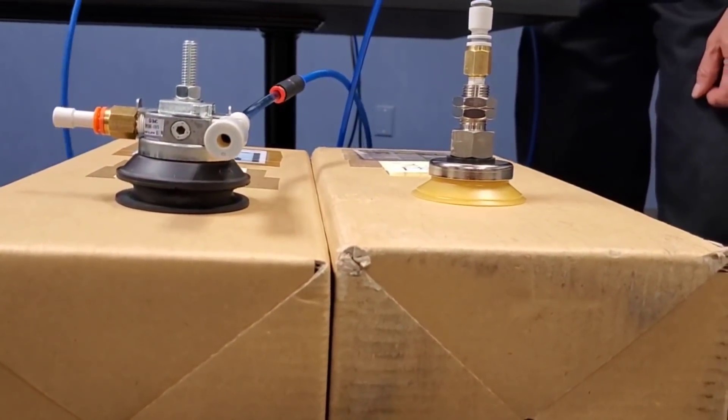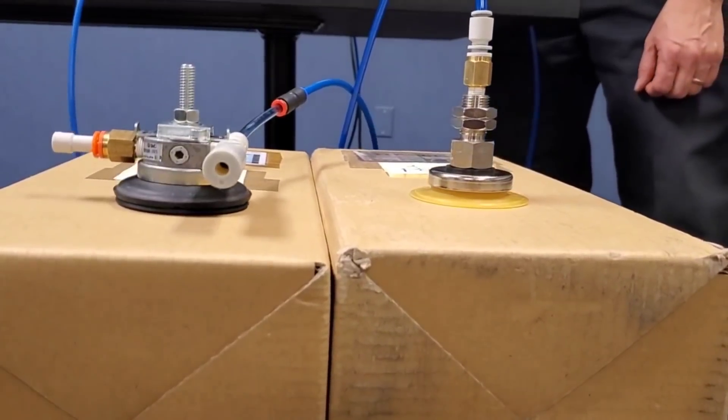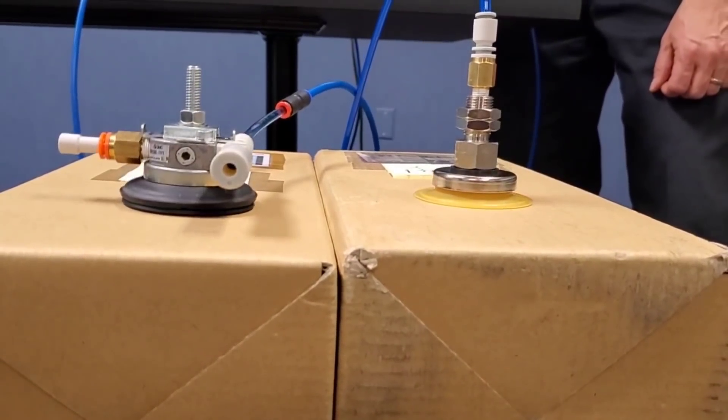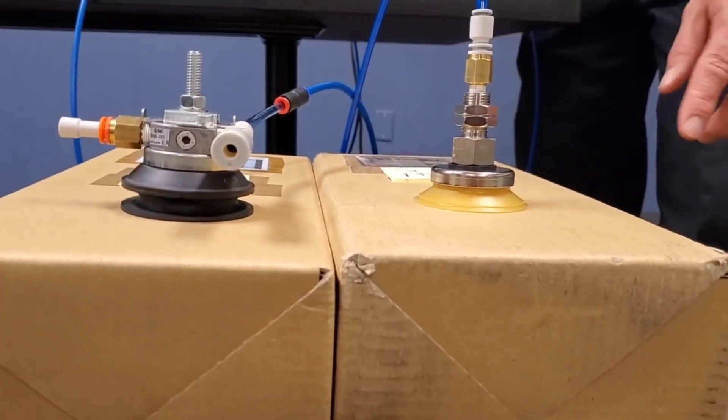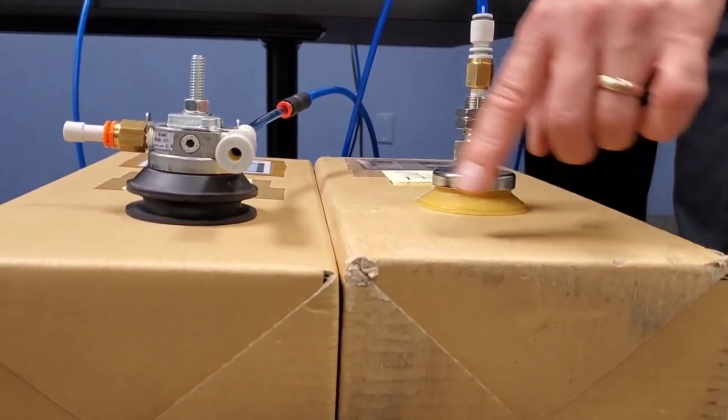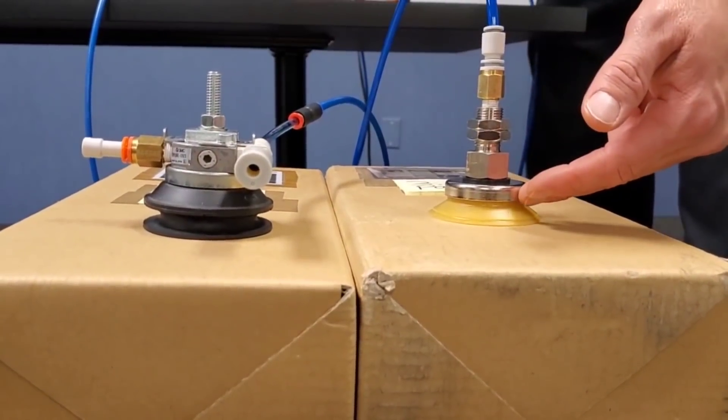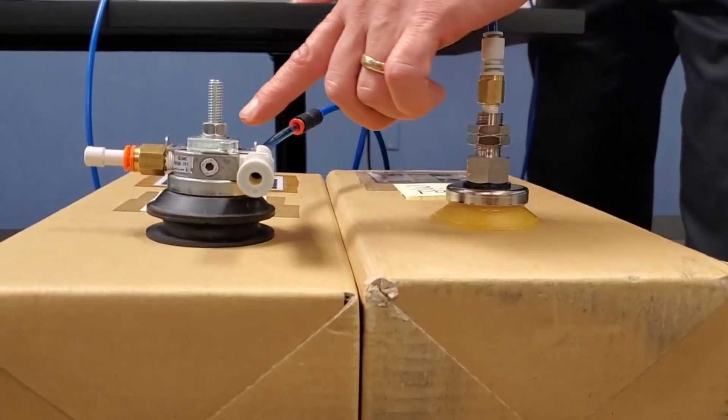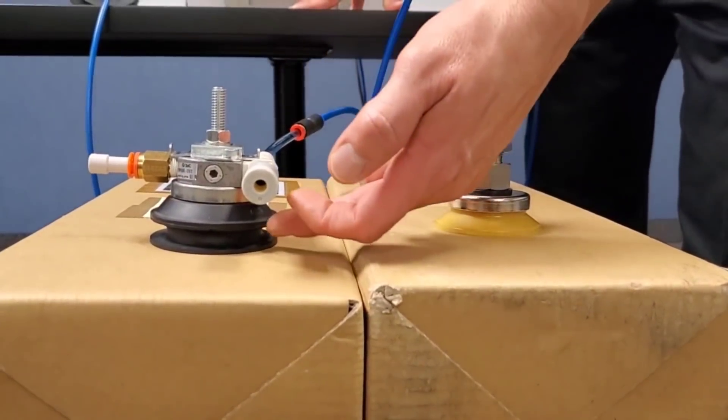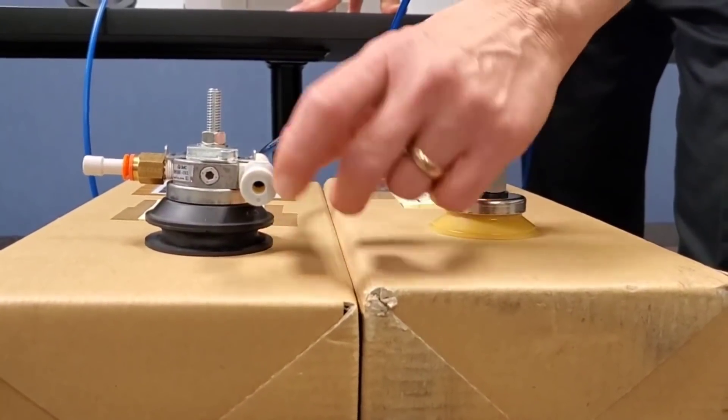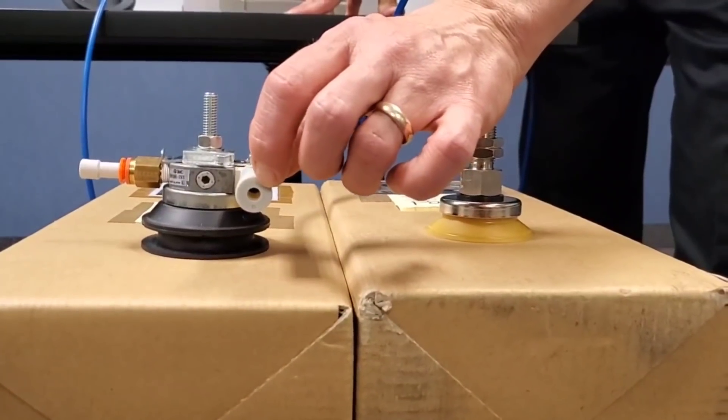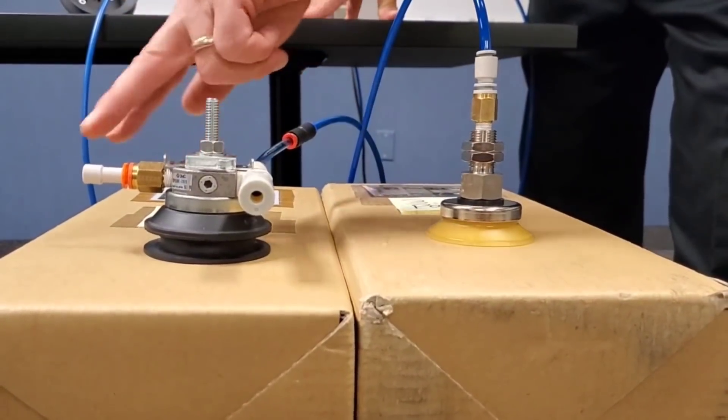I'm running them off the same supply valve. Depending on your work surface, this cup has shown with other materials to release slightly quicker than this. The reason being, you are venting the negative pressure inside here through your silencer element. All three ports are plugged.